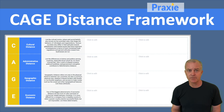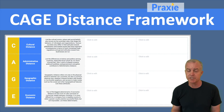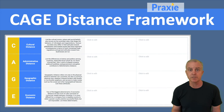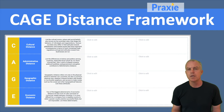CAGE is an acronym that stands for Cultural, Administrative, Geographic, and Economic. When you're doing an analysis of what countries represent the biggest international growth opportunities or strategies for you, you can compare two or more countries by these different CAGE dimensions.